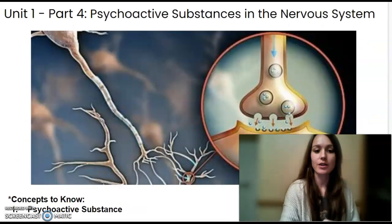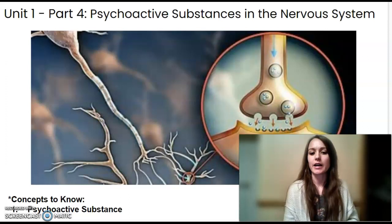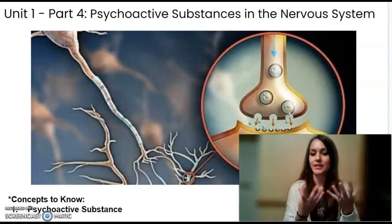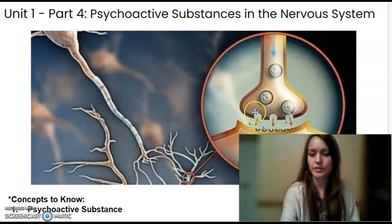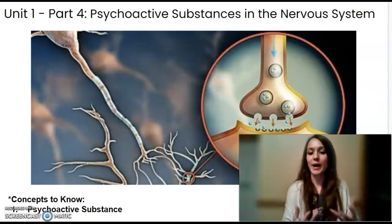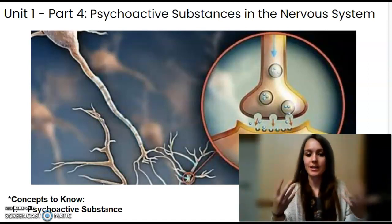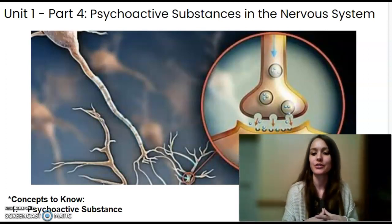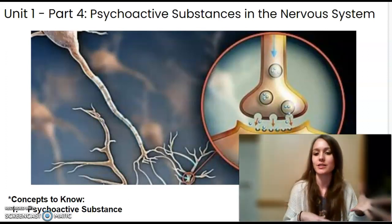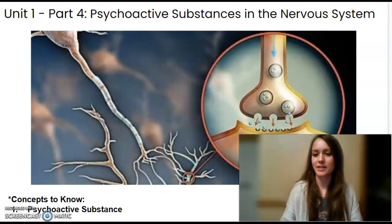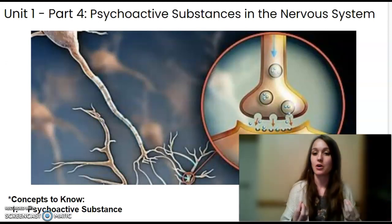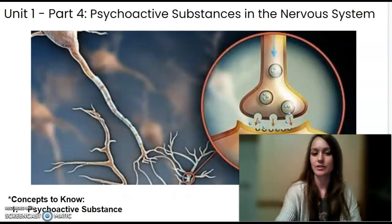A psychoactive substance is a chemical that impacts the nervous system when it is consumed or taken into the body. It enters into the synapse and it changes, affects, or impacts the message in some way. It can alter someone's thinking, behavior, mood, consciousness, or perception. Any type of brain message being sent through the central nervous system can be altered by a psychoactive substance when it enters the synapse.